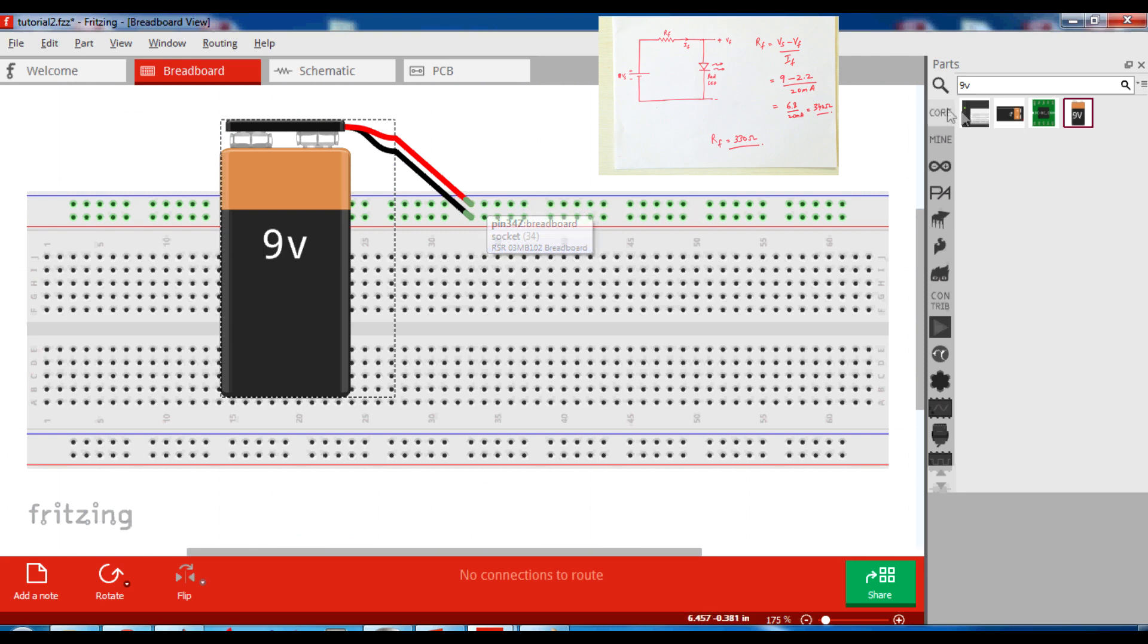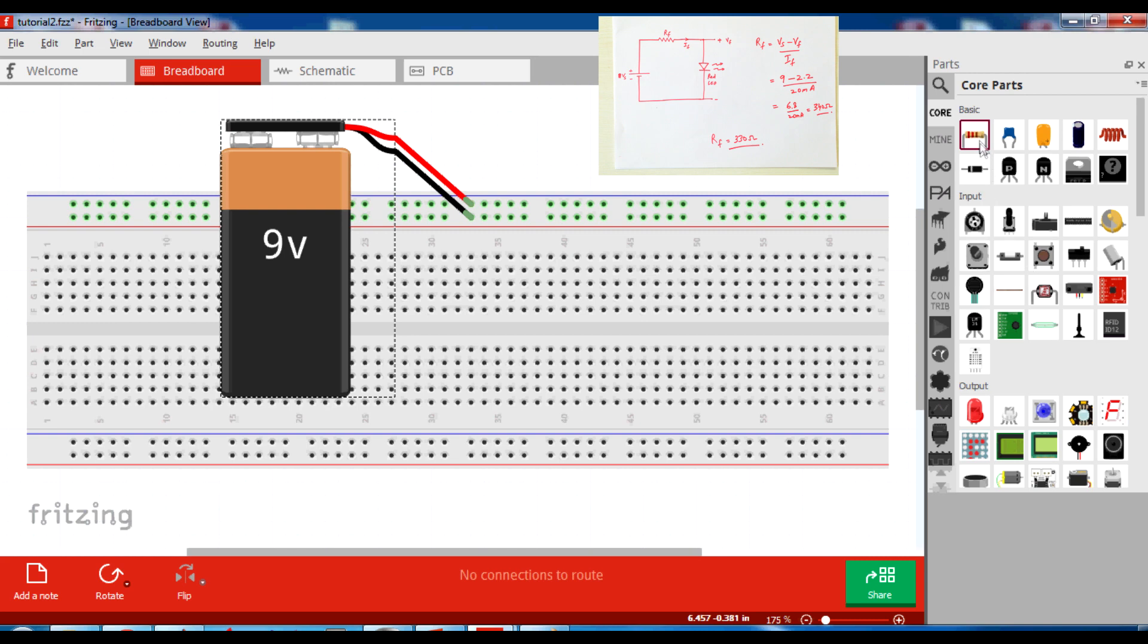Let us use a resistor now and place it somewhere here. You can see that when you place the resistor here, the points on the vertical grid turn green, which means they are internally connected by metal. From the circuit diagram you can see that the positive of the battery is connected to one end of the resistor. Let us make that connection here.